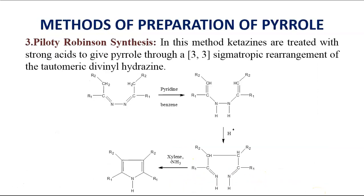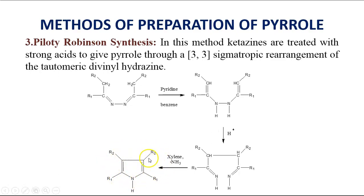The third method for preparation of Pyrrole is Paal-Knorr Synthesis. In this method, ketazines are treated with strong acids to give Pyrrole through a sigmatropic rearrangement of tautomeric divinyl hydrazine. These ketazines undergo a 3,3-sigmatropic rearrangement and we obtain the final Pyrrole compound substituted at different positions.